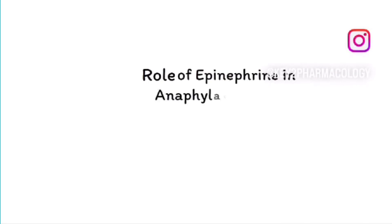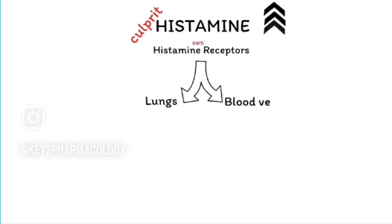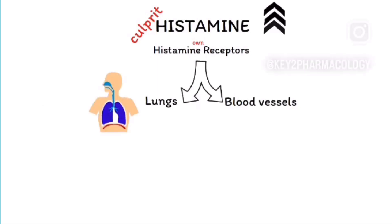The role of epinephrine in anaphylactic shock: the basic culprit is histamine. There is massive release of histamine, which acts on its own histamine receptors present in the lungs and in the blood vessels. In the lungs, it causes bronchospasm, which results in difficulty in breathing — the patient cannot breathe.